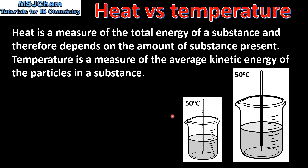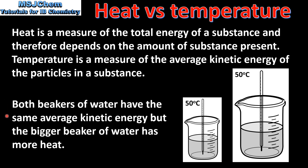Here we have two beakers — a smaller beaker on the left and a bigger beaker on the right. The bigger beaker contains more water than the smaller beaker. The water in both beakers is at a temperature of 50 degrees C. Both beakers have the same average kinetic energy because they are the same temperature, but the bigger beaker of water has more heat because it contains a greater volume of water than the smaller beaker.